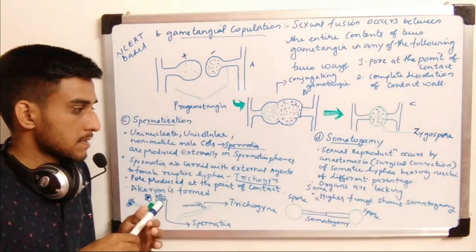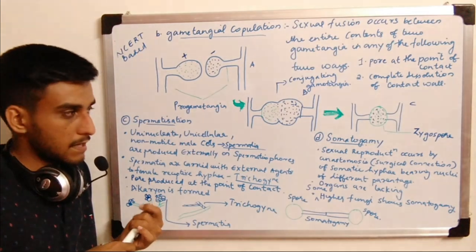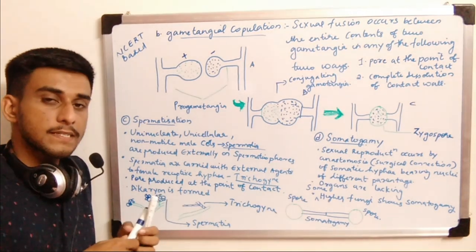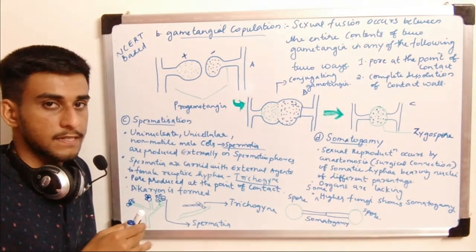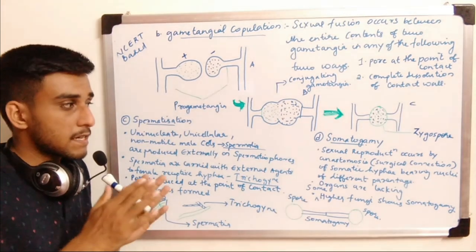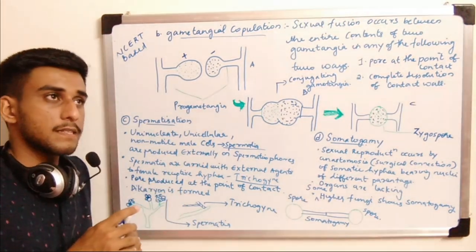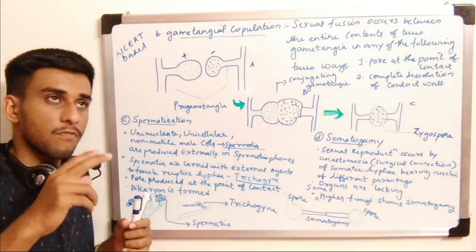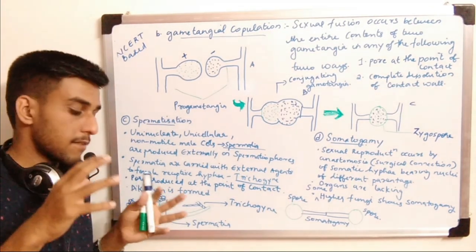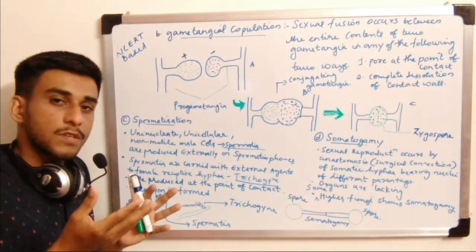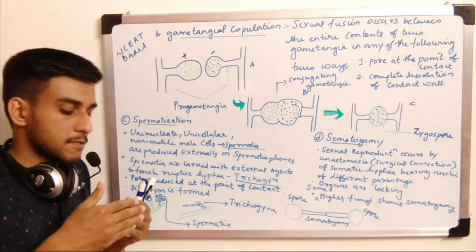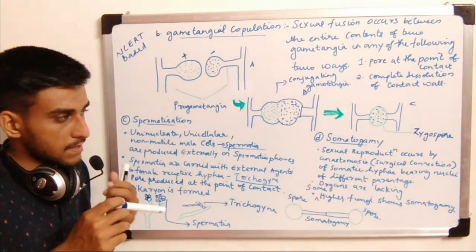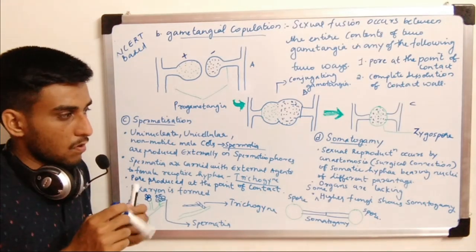The last step is known as somatogamy. Somatic cells are vegetative cells. Somatogamy occurs in some higher fungi where sex organs are lacking. In such cases, the hyphae of both compatible parentage fuse together — this fusing process is known as somatogamy, where gamy means fusion.